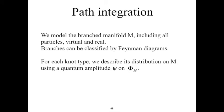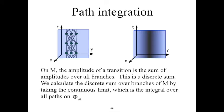We model the branched manifold M, including all the particles both virtual and real. Because some branches may include virtual particles that do not appear on other branches, we classify the branches using Feynman diagrams. For each knot type, we describe its distribution on M using a quantum amplitude on the unbranched manifold Φm. On M, the amplitude of a transition is the sum of the amplitudes over all of its branches — this is a discrete and finite sum. The branches of M are complicated, and therefore we approximate the discrete sum by taking a continuous limit, which is the integral over all possible paths on Φm. This continuous limit approximation may have unfortunate infinities, but we remember that it is only a model of a discrete and finite system, and the finiteness of the branch manifold M assures that those infinities would not occur in the finite sum.